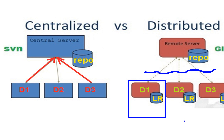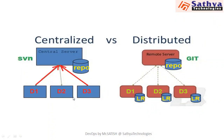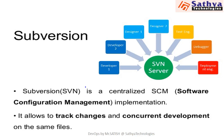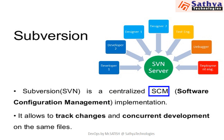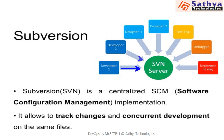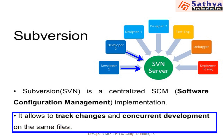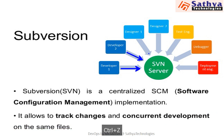Now we can see how SVN, the centralized version control tool, will work. SVN — Subversion — is a centralized software configuration management system, or source code management system. Here, multiple developers will add their code to a central repository. It allows you to track changes and concurrent development on the same files — that is, multiple developers will work on the project at the same time.